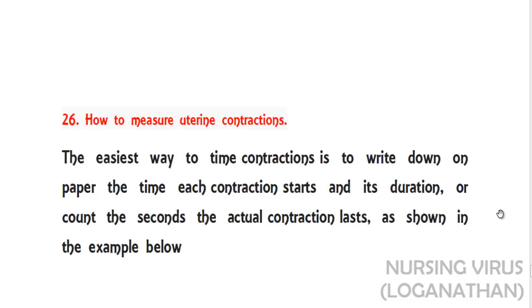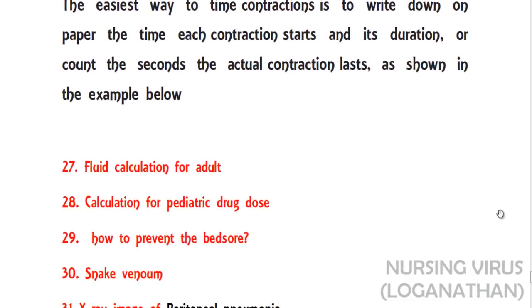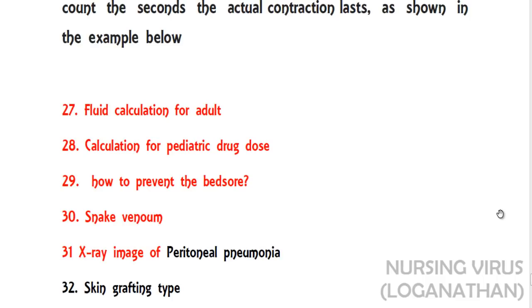They asked how to measure uterine contractions. The easiest way is to write down the time each contraction starts and its duration, measured using a partograph. There was also a fluid calculation question for adults — given an amount of fluid, a time duration, and a drop factor, to calculate the number of drops per minute — and a drug calculation question for pediatrics.